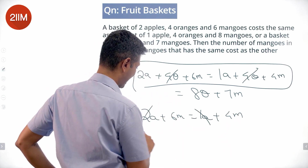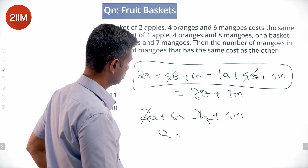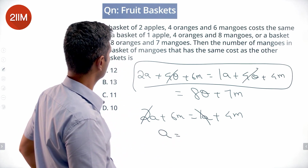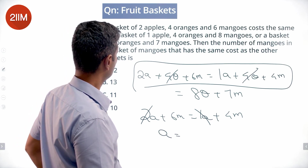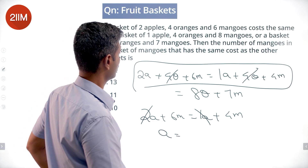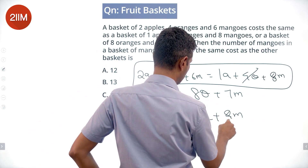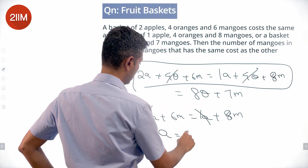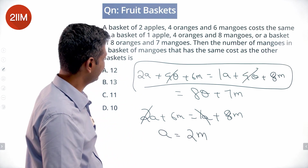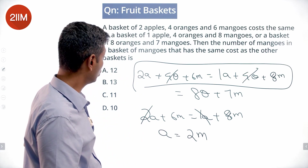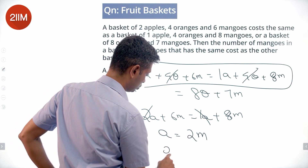Using 2a + 4o + 6m = 1a + 4o + 8m — the eight is correct, I made a mistake earlier. Canceling the four oranges from both sides gives us: 2 apples + 6 mangoes = 1 apple + 8 mangoes, so one apple equals two mangoes. That is helpful!